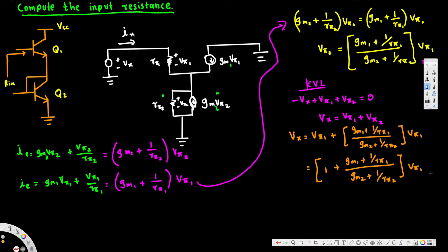Since v51 = r51 · ix (the current through the resistor is ix), we substitute: vx = [1 + (gm1 + 1/r51) / (gm2 + 1/r52)] · r51 · ix.